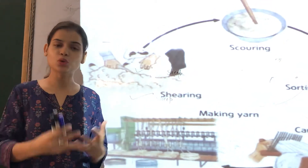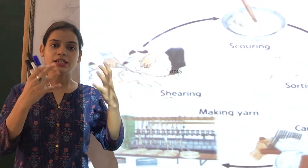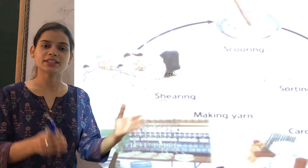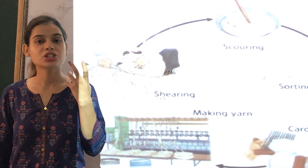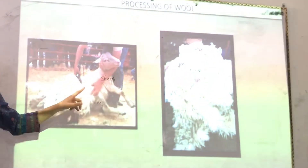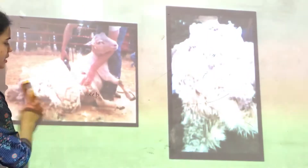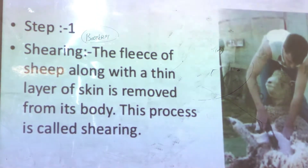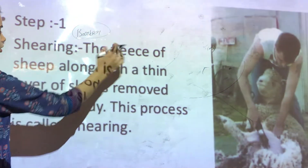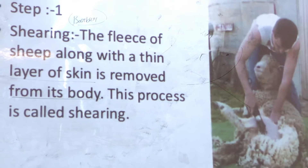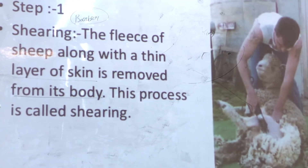As soon as we remove the hair from the skin of any sheep or animal, the process starts from there. That removal of hair from the sheep is known as shearing. There is one tool very similar to the tool used by a barber. The fleece or hair of the sheep along with a thin layer of skin is removed from its body. This process is called shearing, as you can see in the picture.